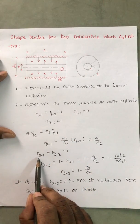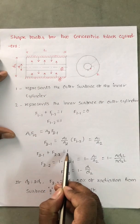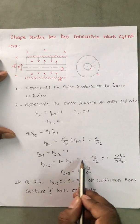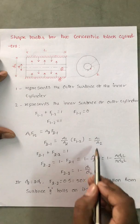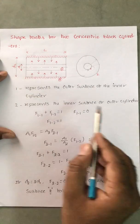Apply sum of all shape factors - for surface 2 is also 1. F₂₁ plus F₂₂ equal to 1. F₂₂ equal to 1 minus F₂₁. 1 minus F₂₁ means A₁ by A₂. So 1 minus A₁ by A₂. A₁ means πDL surface area.